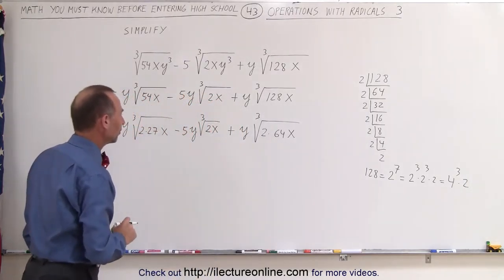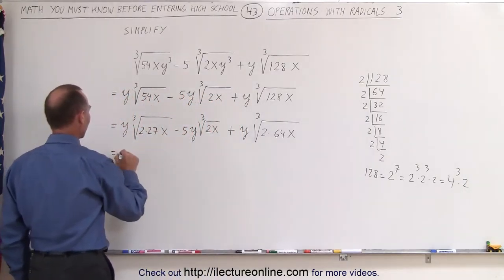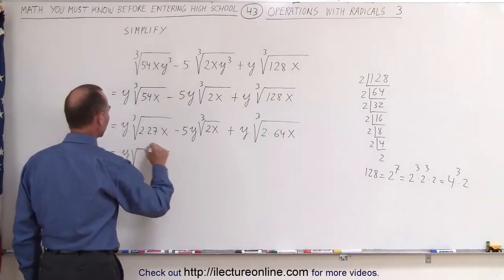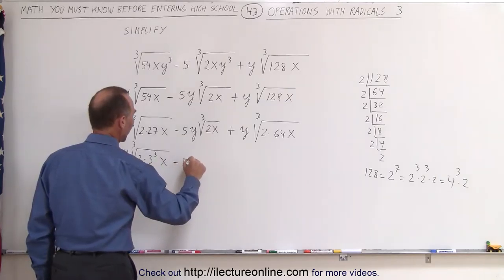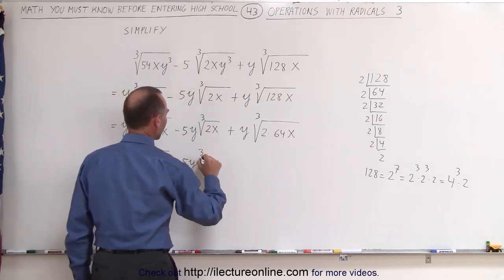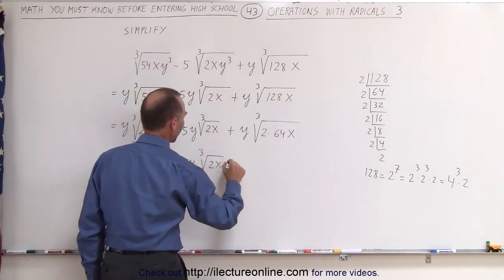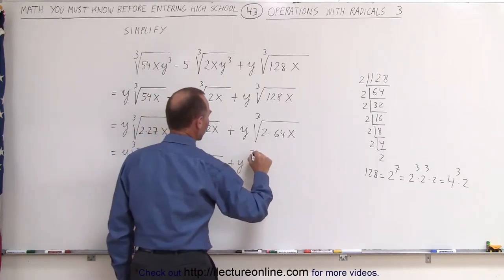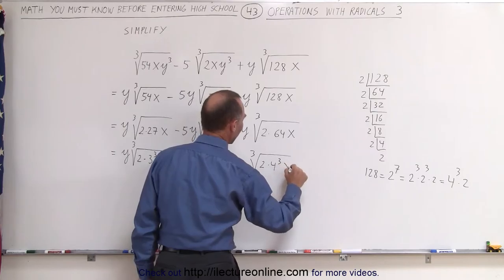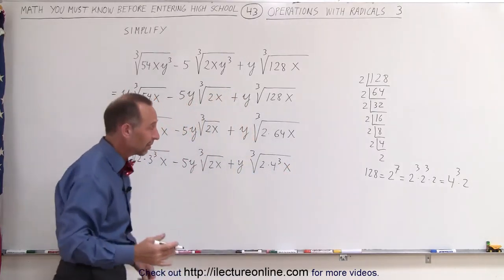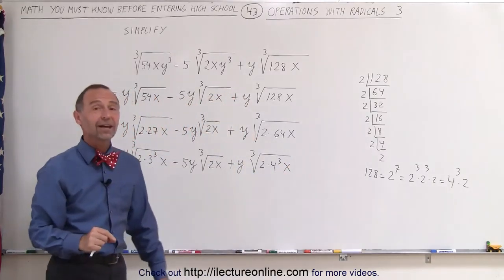Now we're in business because now we can write this as y times the cube root of 2 times 3 cubed x minus 5y times the cube root of 2x plus y times the cube root of 2 times 4 cubed times x. You just have to see it sometimes and if you don't you can find it out like that.